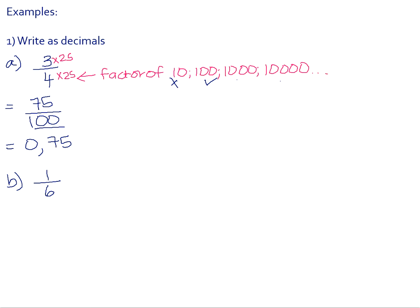With 1 over 6, it's a little bit more difficult because 6 is not a factor of 10, it's not a factor of 100, it's not a factor of 1000. In fact, it will not divide into any of your powers of 10. So what we need to do in this instance is remember what the fraction line means — it actually means divide. So 1 over 6 actually means 1 divided by 6.